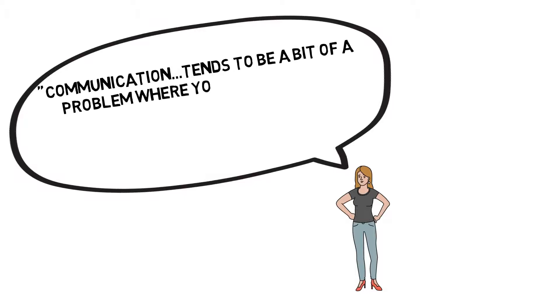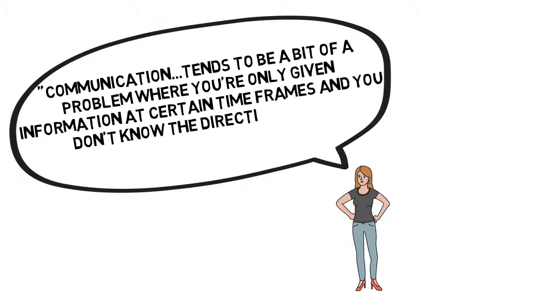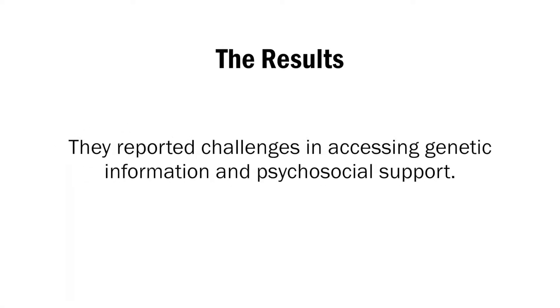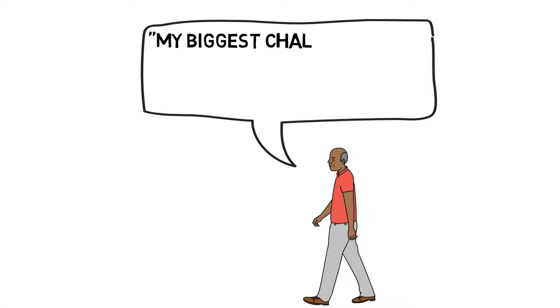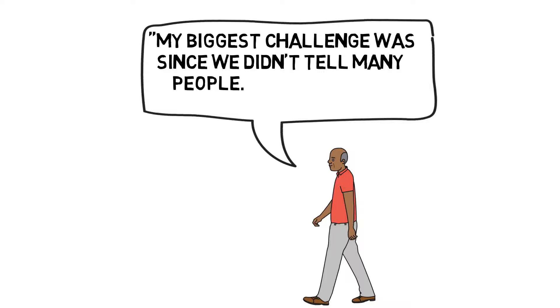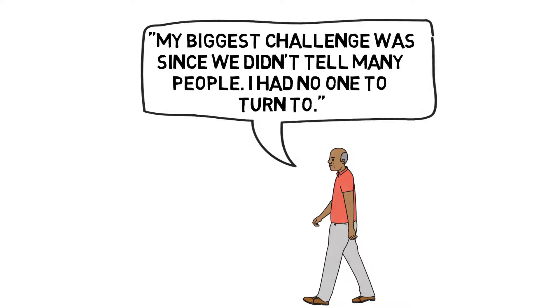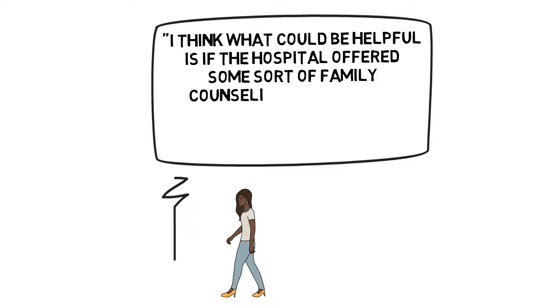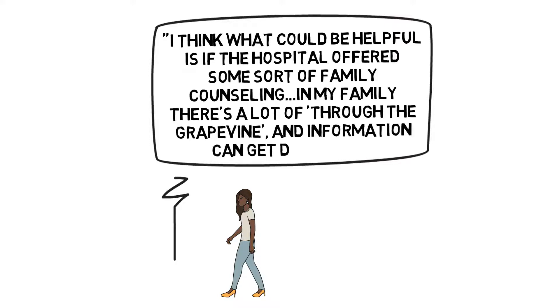Communication tends to be a bit of a problem where you're only given information at certain time frames and you don't know the direction where you're going or you don't know what's changed. They reported challenges in accessing genetic information and psychosocial support. My biggest challenge was since we didn't tell many people, I had no one to turn to. I think what could be helpful is if the hospital offered some sort of family counseling. In my family, there's a lot of through the grapevine and information can get distorted.